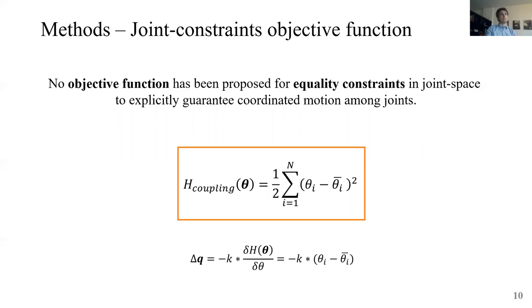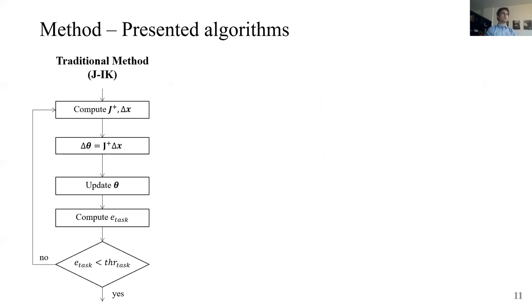So given this solution, we now propose two algorithms to be compared with the traditional method that we use for serial robots. In particular, on the left, the standard method first computes the Jacobian matrix, it solves the inverse kinematics problem, it updates the configuration, then through the direct kinematics, it goes back to the task space to check if the task error is below a certain tolerance. Then if it is, the algorithm exits the convergence loop.